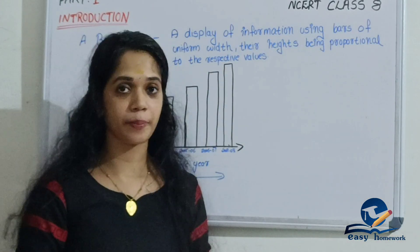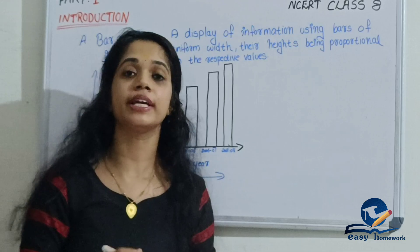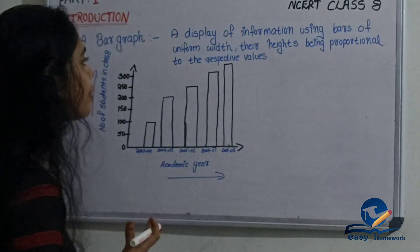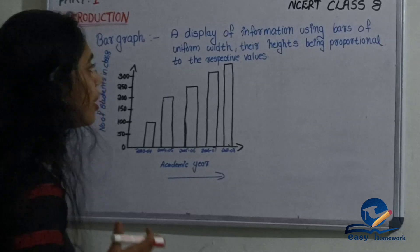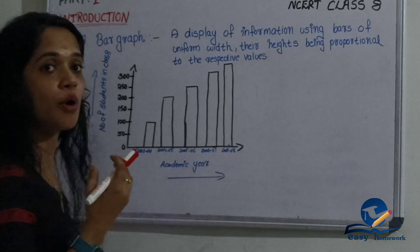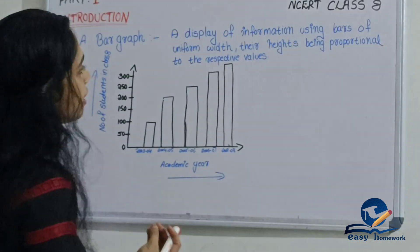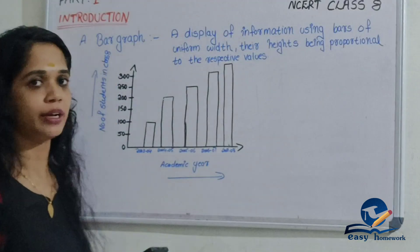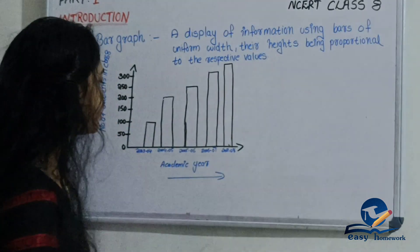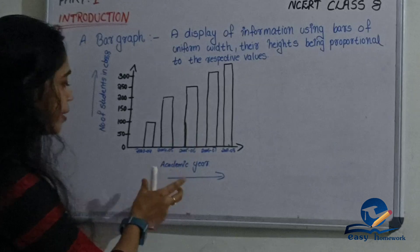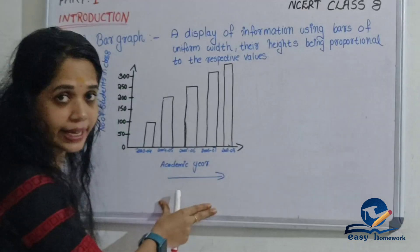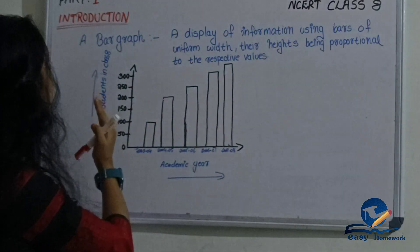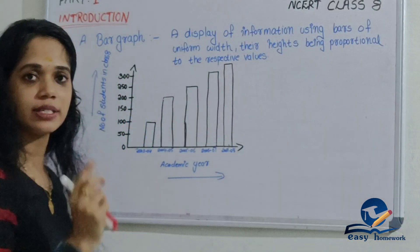We will look at data representation using a bar graph. A bar graph is a display of information using bars of uniform width, with their heights being proportional to the respective values.